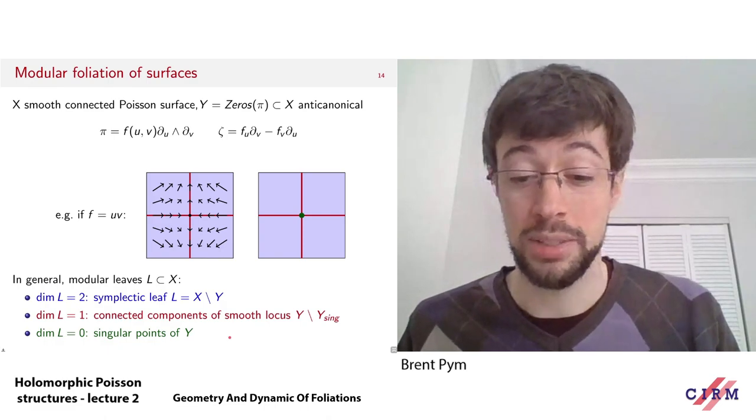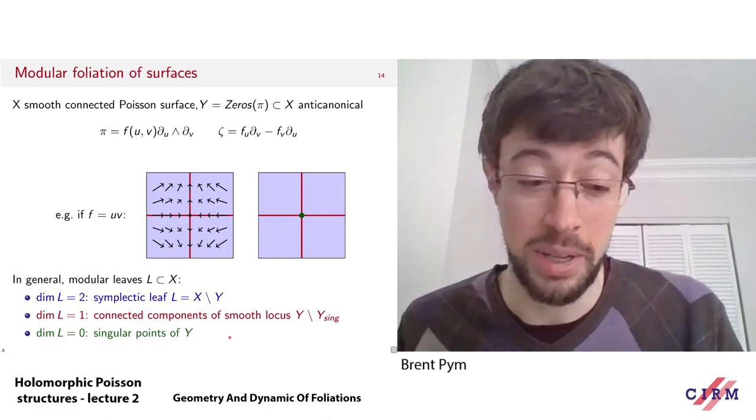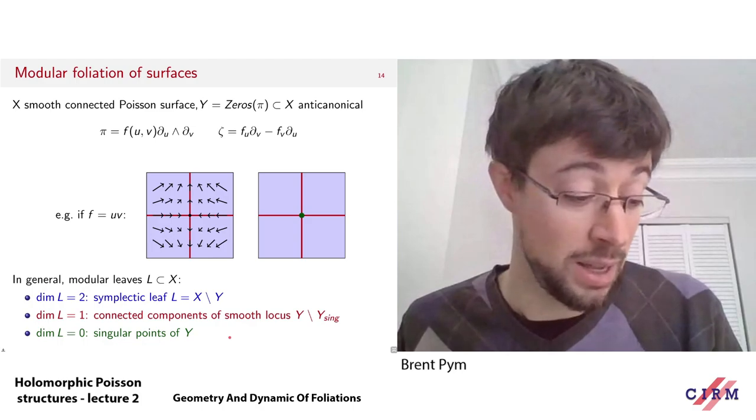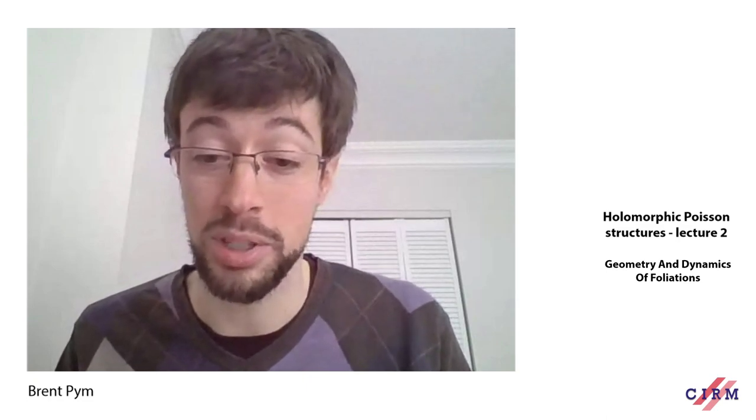That's all I wanted to say about these foliations of Poisson manifolds for today. In the next lecture, I'm going to start to talk about some global aspects of the structure of these Poisson varieties and their foliations.